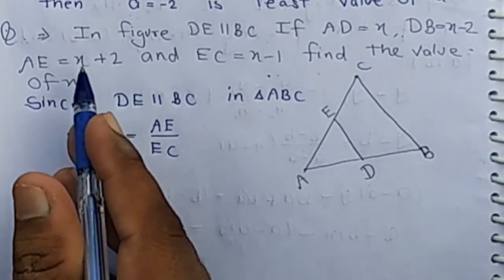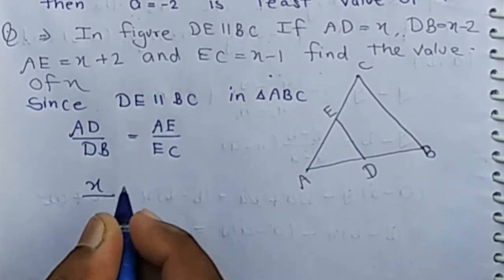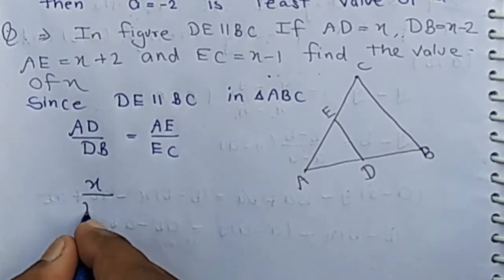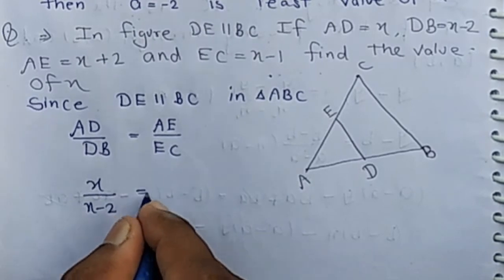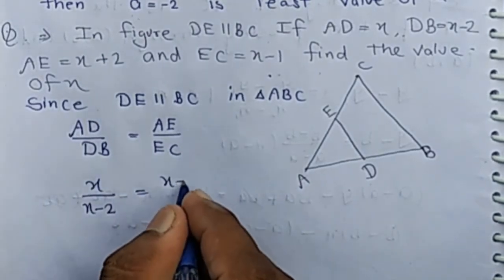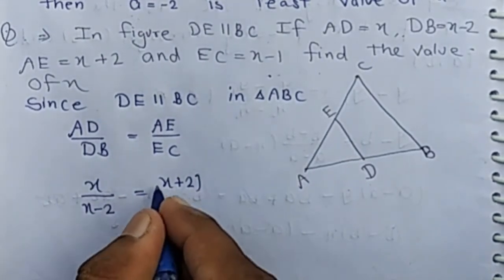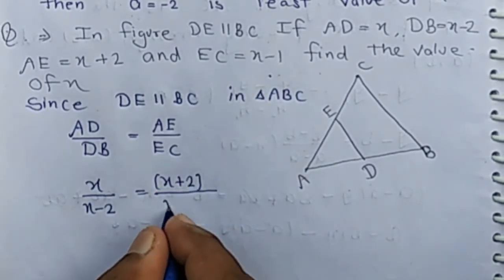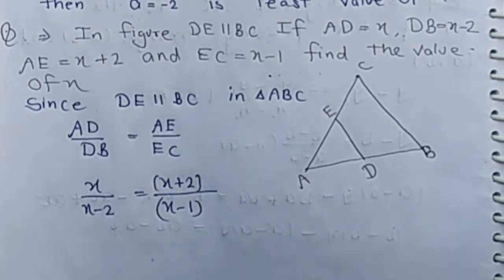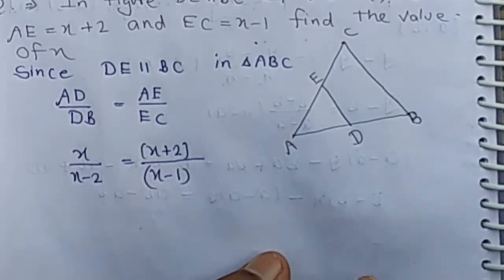AD is given as X, DB is given as X minus 2, AE is X plus 2, and EC is X minus 1. Now we have to find the value of X.